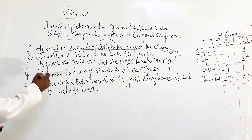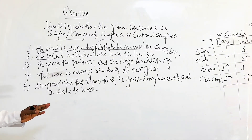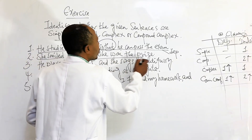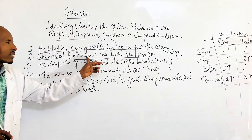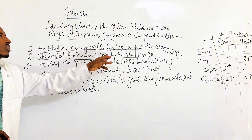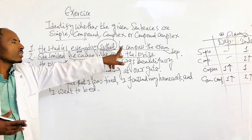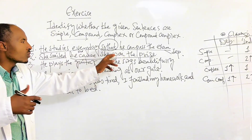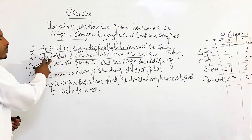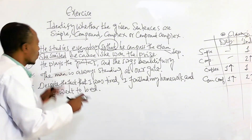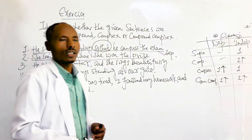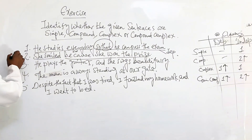The second one: 'She smiled because she won the prize.' 'She smiled' is independent. 'Because' is a subordinating connector, making 'because she won the prize' a dependent clause. One independent, one dependent — this sentence is also complex.